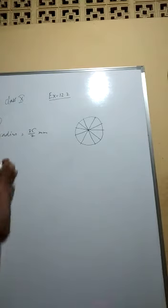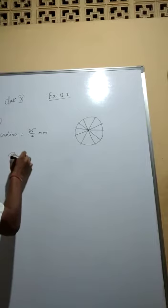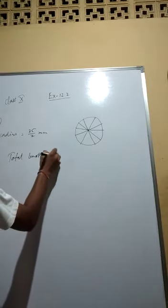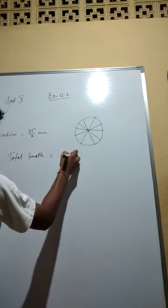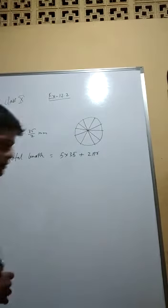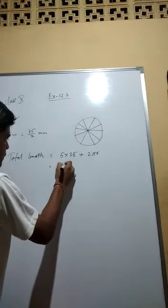The total length. So total length is equal to 5 into 35 plus 2 pi r.